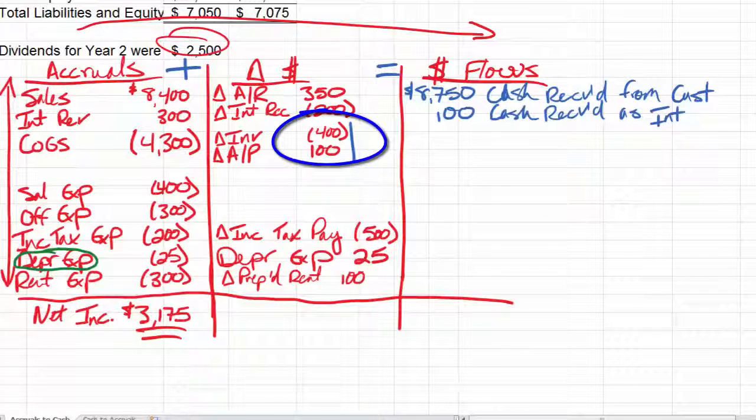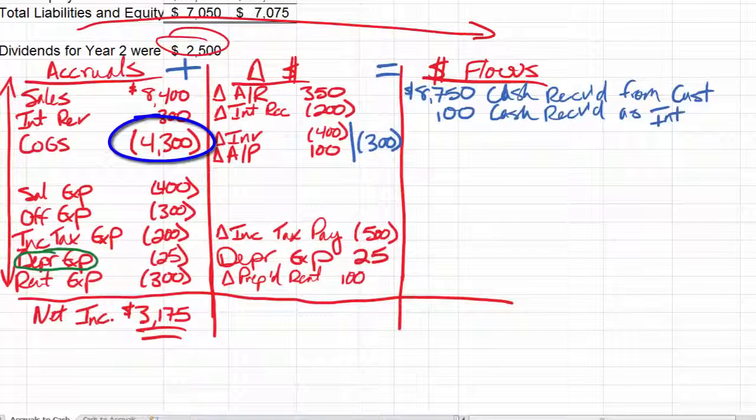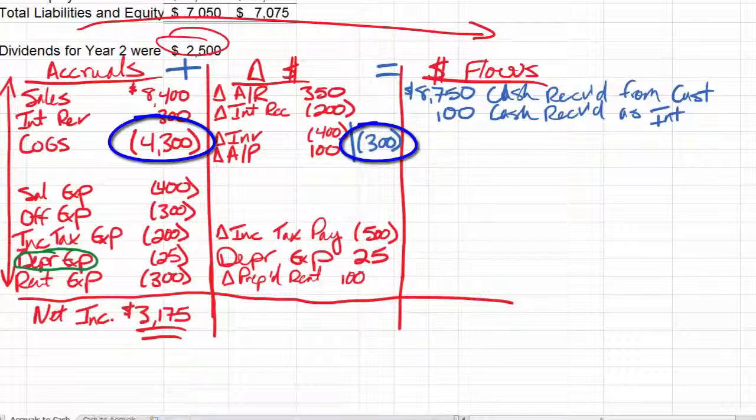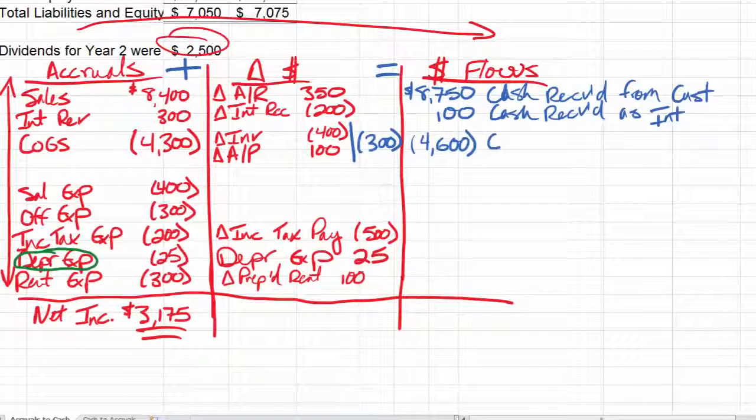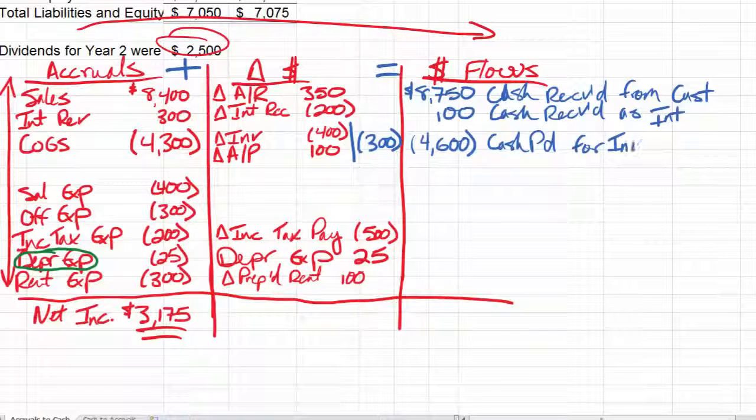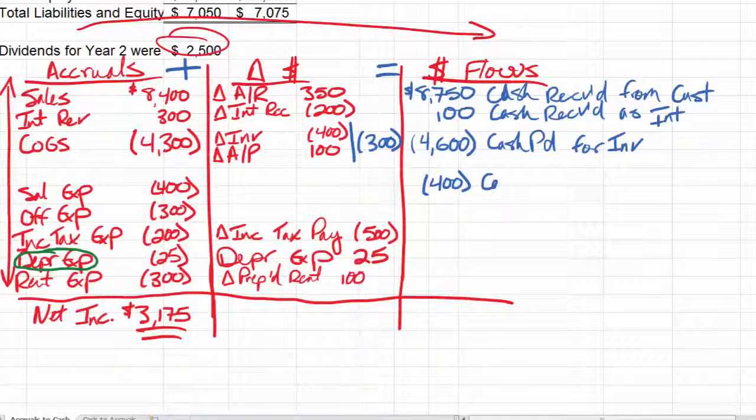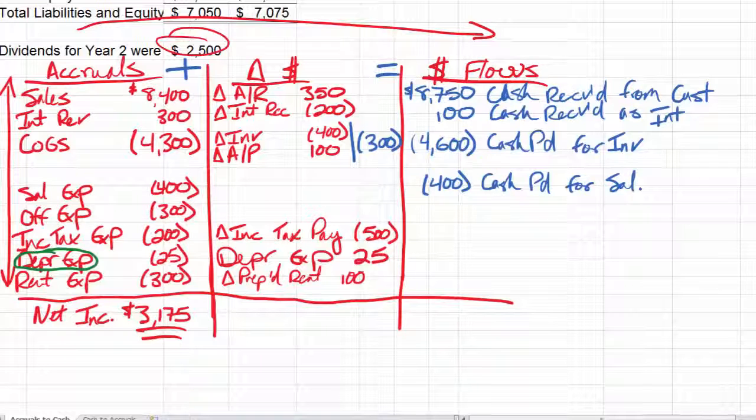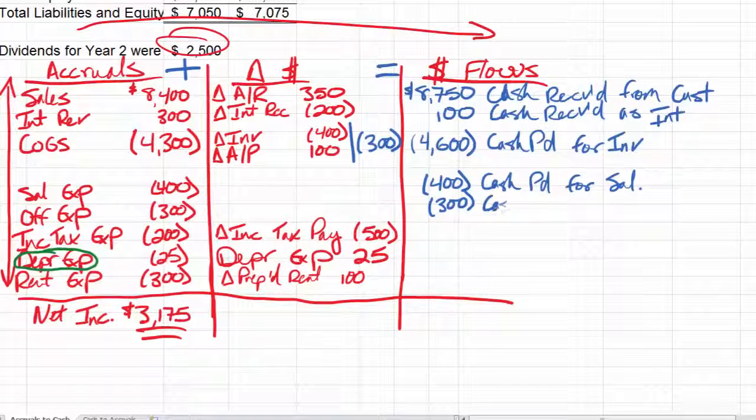In this case, negative 400 plus a positive 100 is negative 300. So negative 4,300 plus a negative 300 is negative 4,600, and that's cash paid for inventory. Salaries, no adjustment, so it stays negative 400, cash paid for salaries. Office expenses, no adjustment there, so we really paid cash for all of those office expenses.